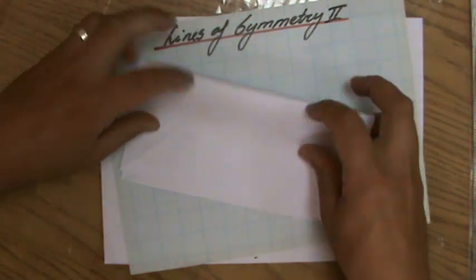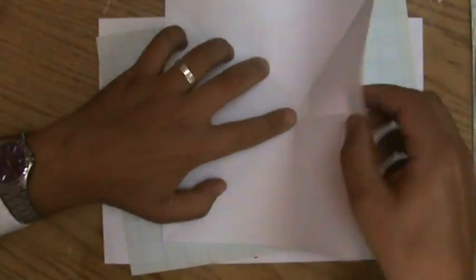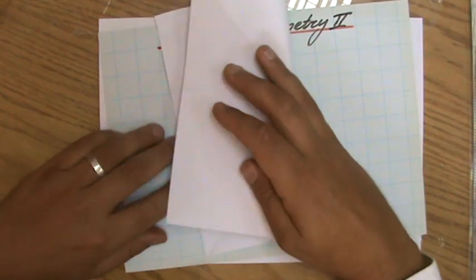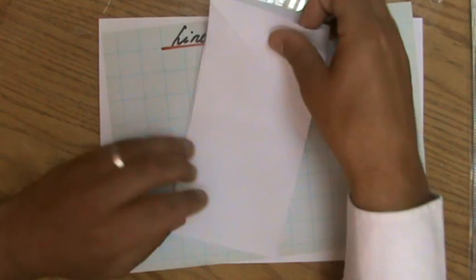Then we have the horizontal line of symmetry. That will be three, and the vertical line of symmetry. As you can see, every time I fold it, both sides of the square are exactly on top of each other. That is a line of symmetry.